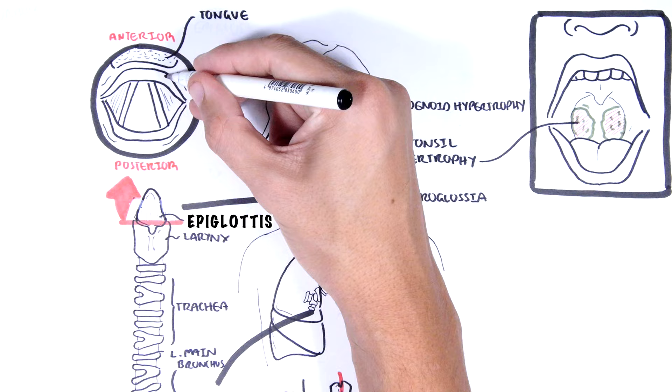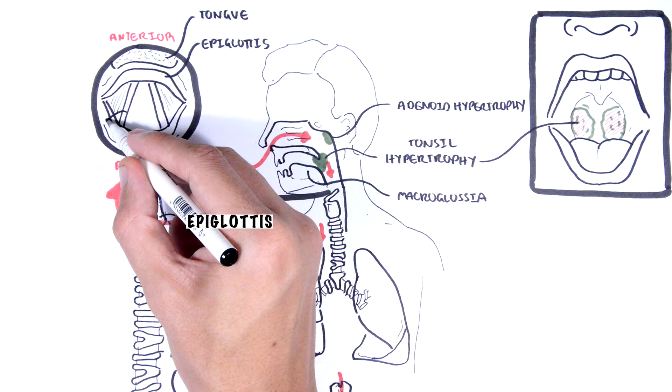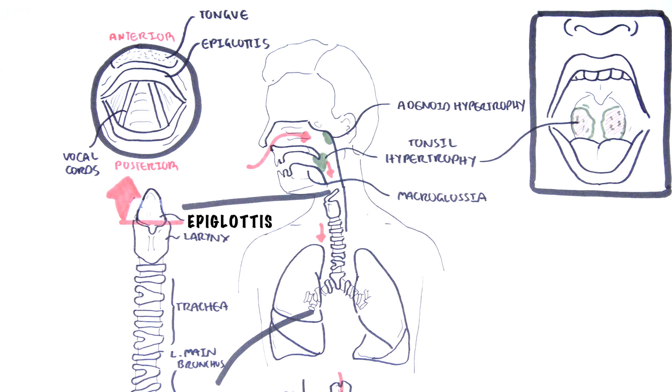Therefore in the front, in the anterior part, here we have the tongue, which continues all the way back down posteriorly to the epiglottis. These are your vocal cords in the larynx, which can open and close during phonation.